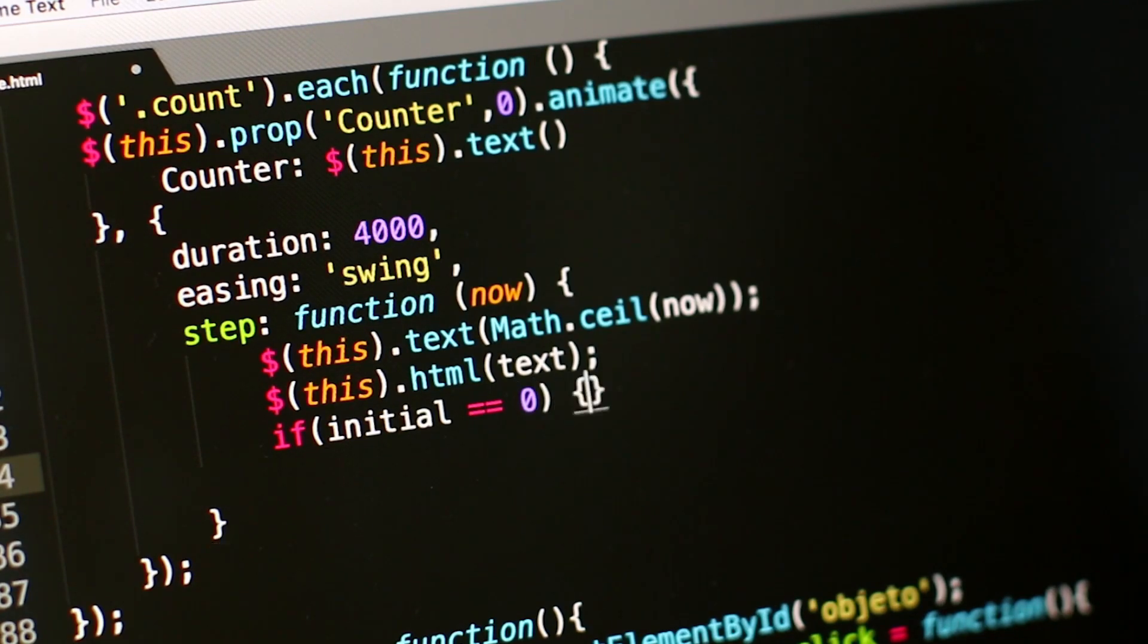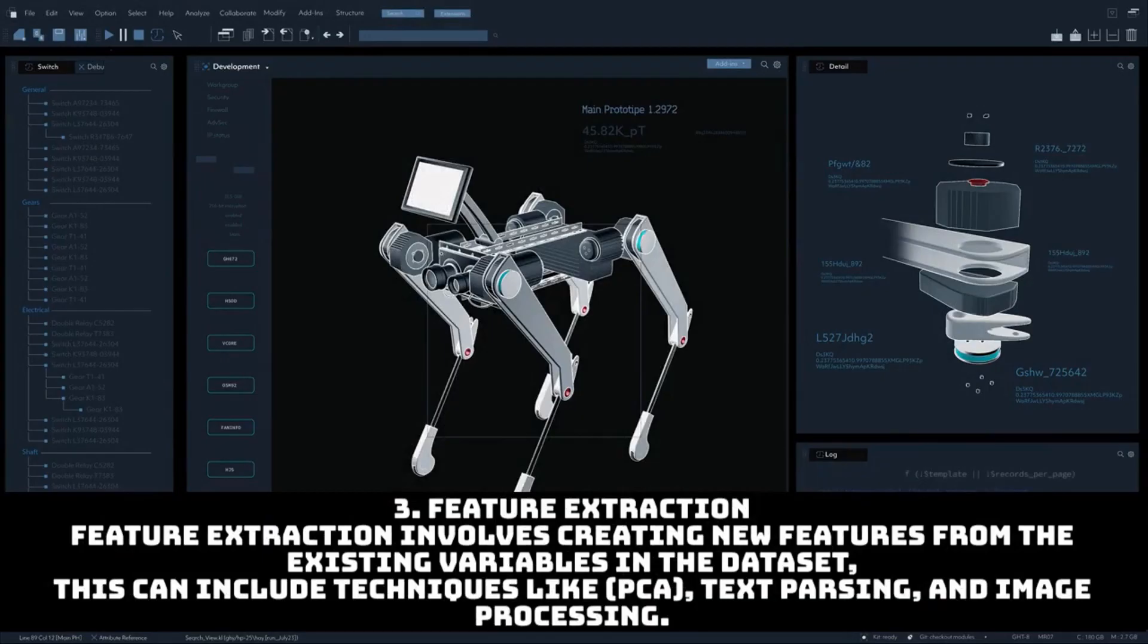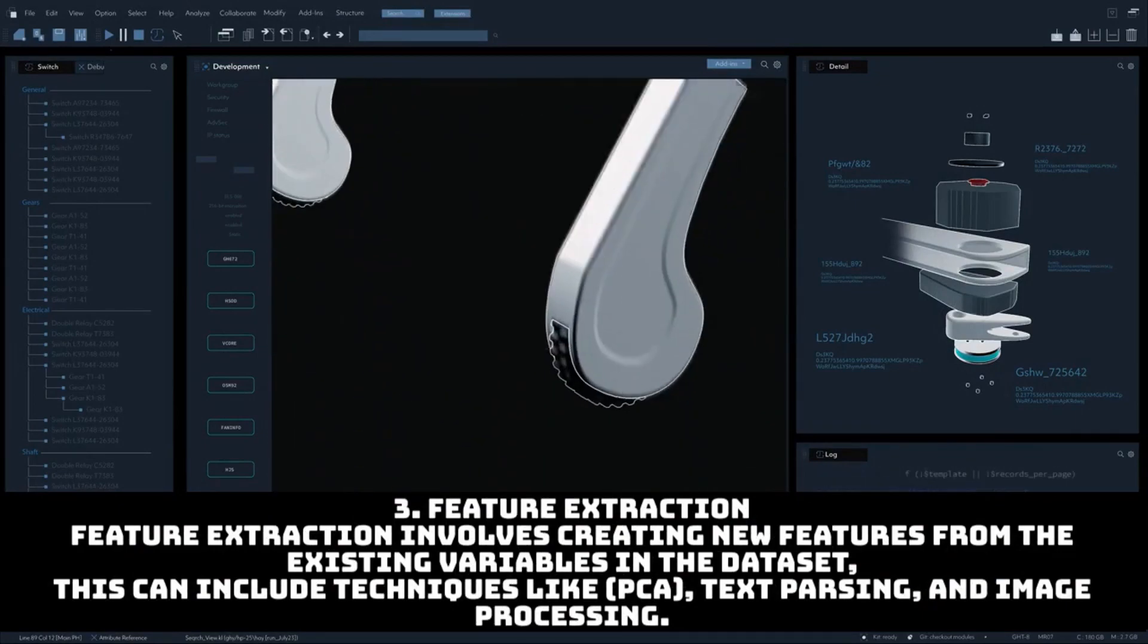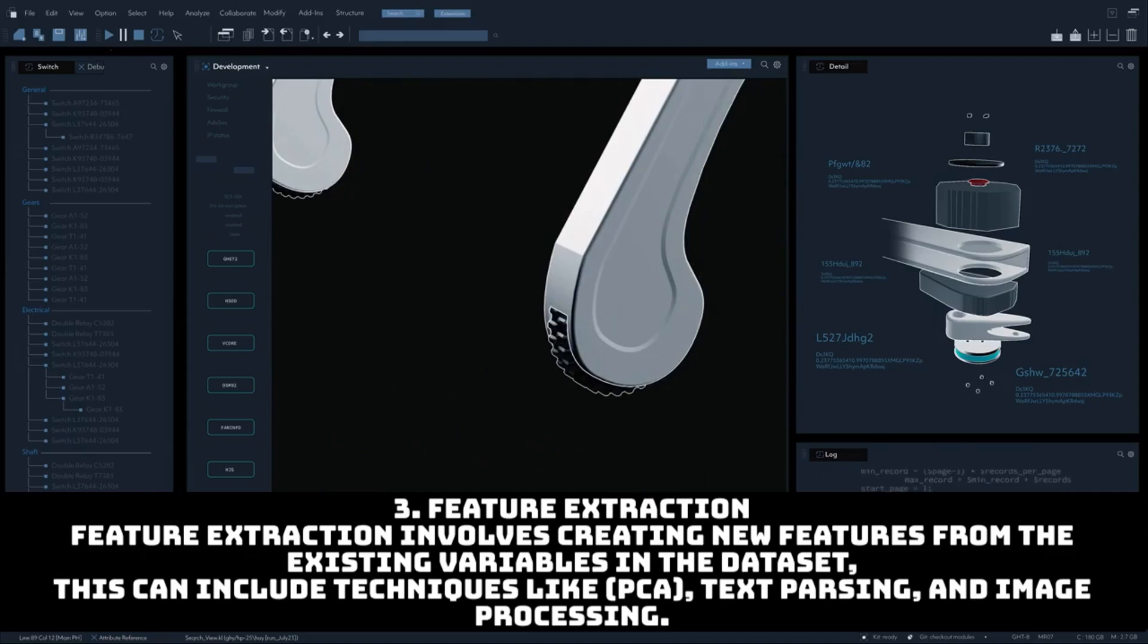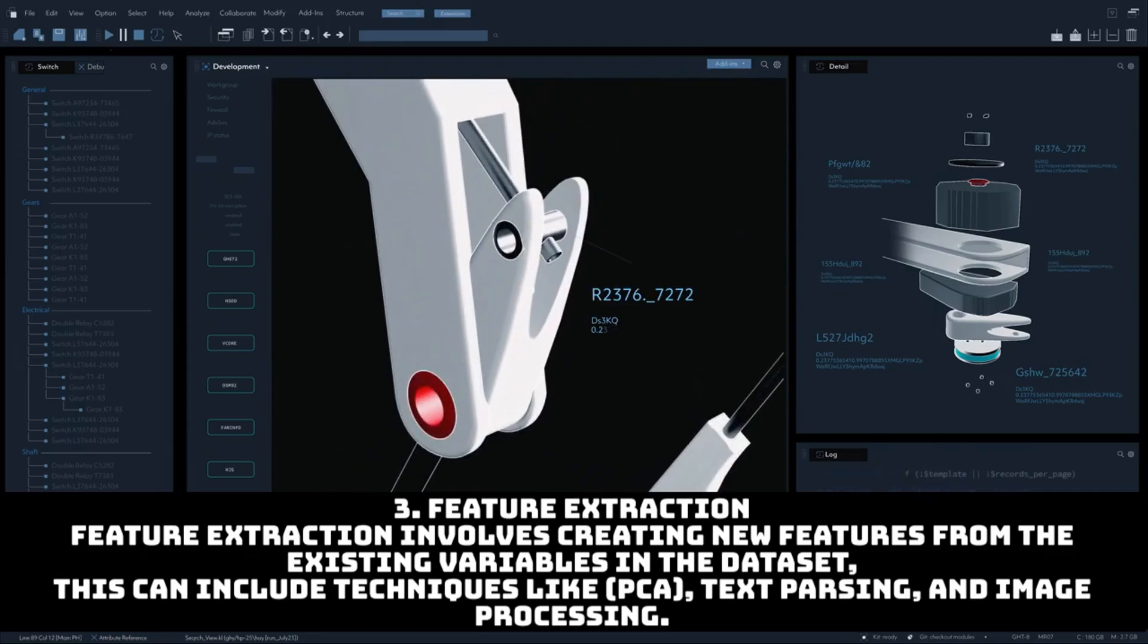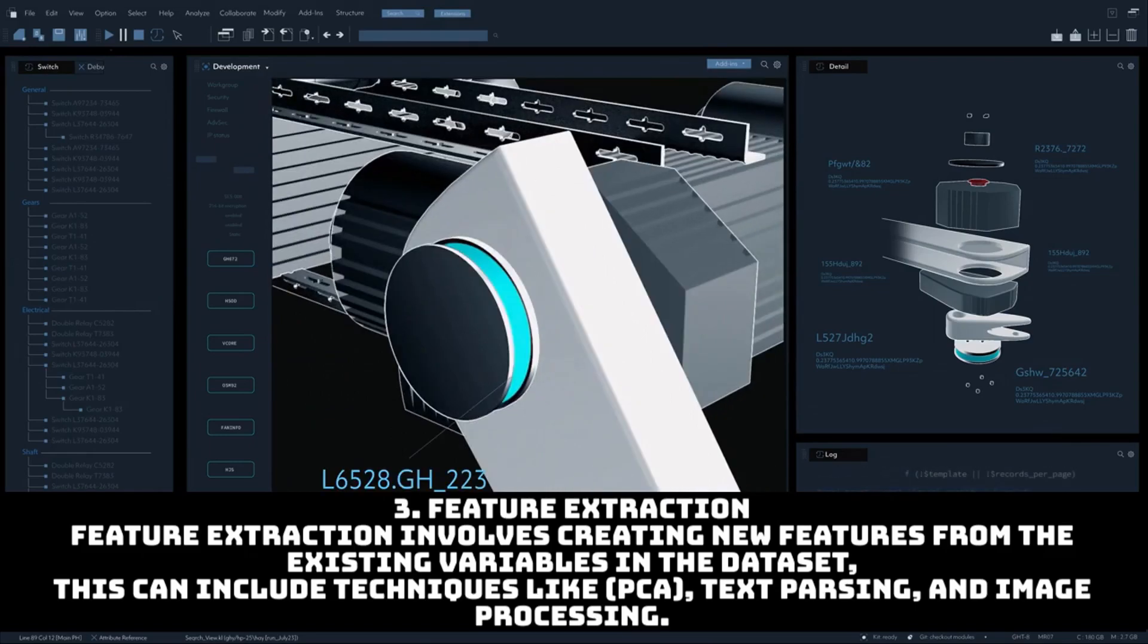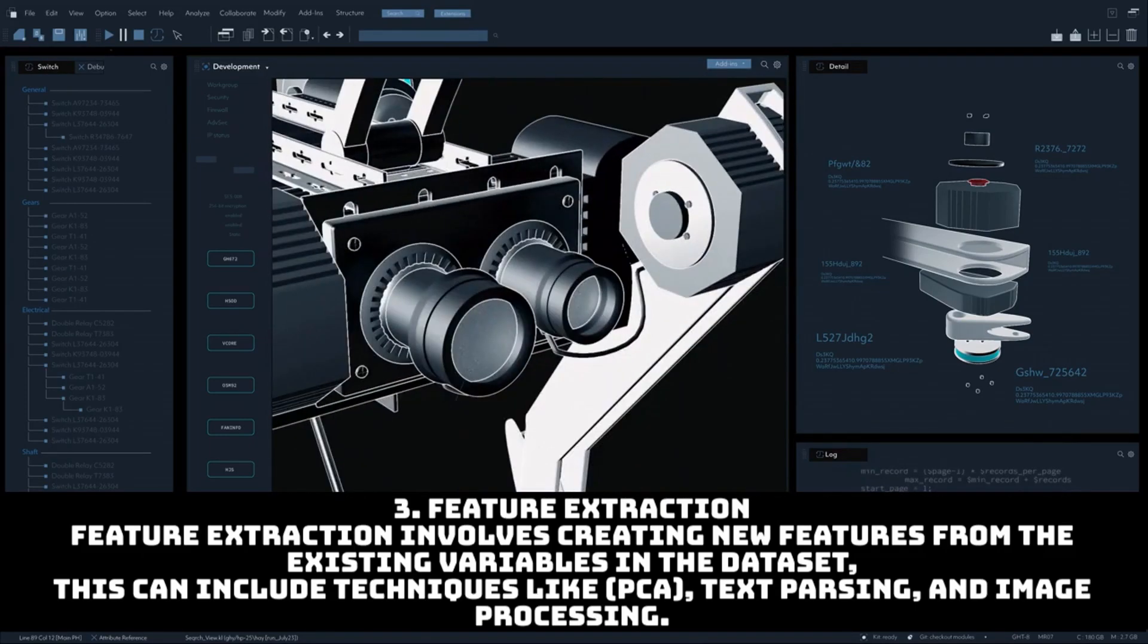The third is feature extraction. Feature extraction involves creating new features from the existing variables in the dataset. This can include techniques like the very famous PCA—principal component analysis—text parsing, and even image processing.